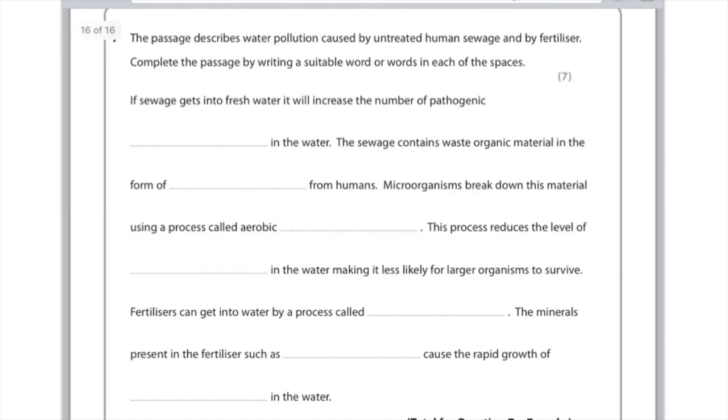Complete the passage by writing a suitable word in each space. If sewage gets into fresh water, it will increase the number of pathogenic microorganisms or bacteria in the water. The sewage contains waste organic material in the form of feces or urine from humans. Microorganisms break down this material using a process called aerobic respiration. This process reduces the level of oxygen in the water, making it less likely for larger organisms to survive.